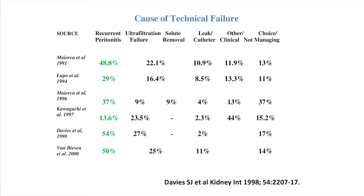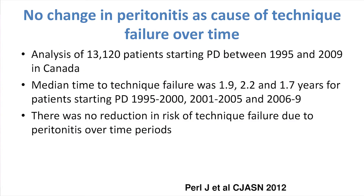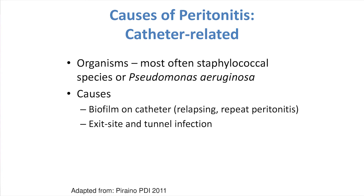It was recognised very early on — this is a paper that Simon Davis published 20 years ago showing that peritonitis was a major cause of technique failure. It is still true today. This is the ANZDATA registry from Australia, showing that infection was causing 30% of technique failure. A Canadian study has shown that the median time to technique failure has not really changed over many decades, and there was no reduction in risk of technique failure due to peritonitis over those time periods. So peritonitis remains important wherever you do peritoneal dialysis.